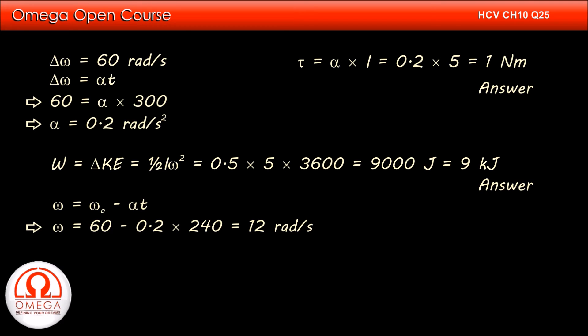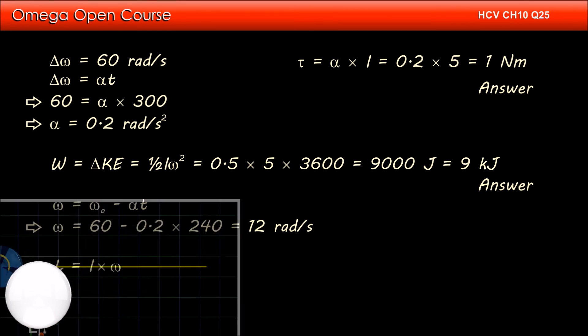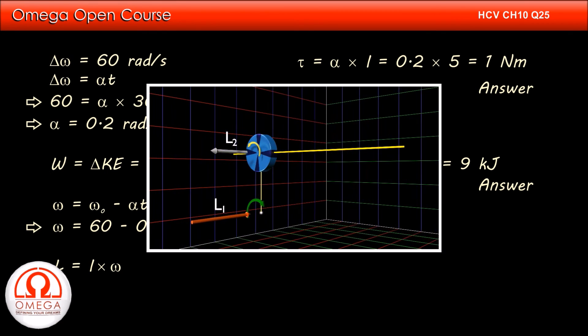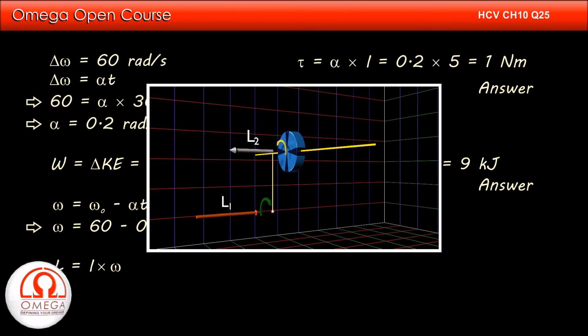The wheel is undergoing pure rotation. In case of pure rotation, the angular momentum is given by moment of inertia about the axis into angular speed. If you don't know how to write the angular momentum in different situations, you should watch our video on angular momentum.